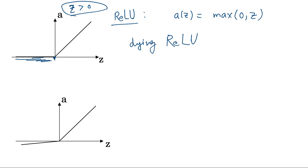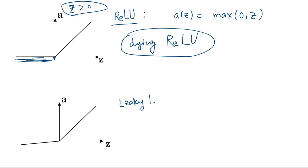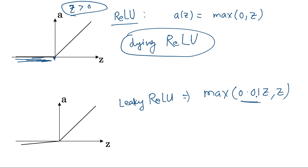For values close to 0 or negative, ReLU's slope is 0, slowing gradient descent — this is the dying ReLU problem. To address it, we use Leaky ReLU, defined as max(0.01z, z). When z is negative, 0.01z is larger than z, so the output is z divided by 100, preserving a small slope of 0.01. When z is positive, z dominates. This small slope in the negative region gets rid of the dying ReLU problem.